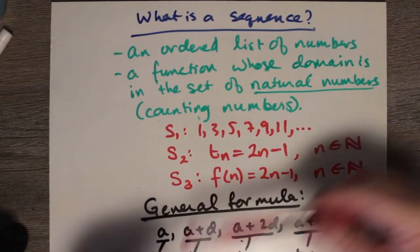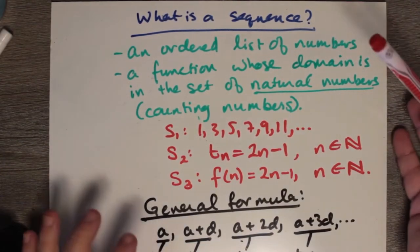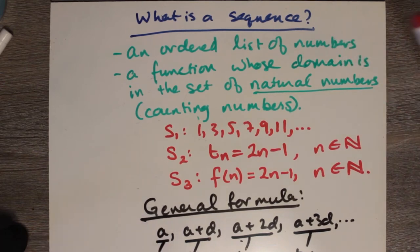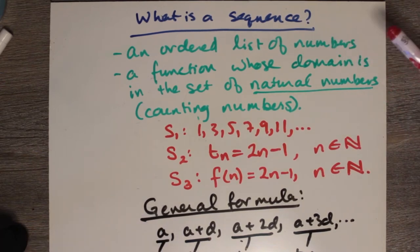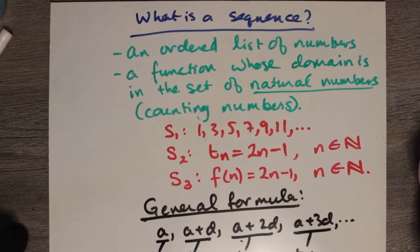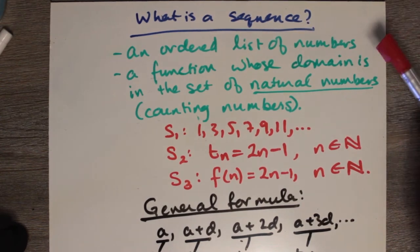What is a sequence? A sequence can be defined as an ordered list of numbers. It has to be in order either from largest to smallest or from smallest to largest, but they do have to be in some kind of numerical order.